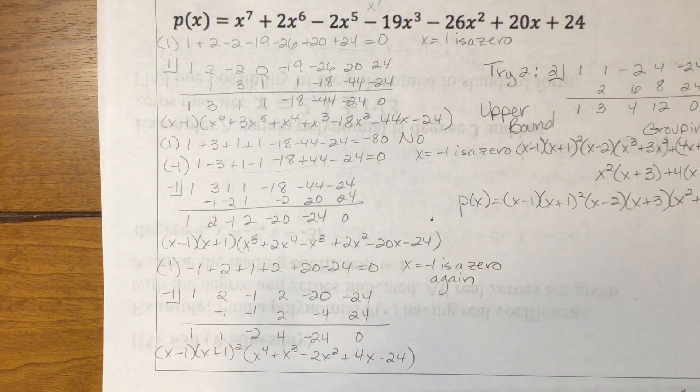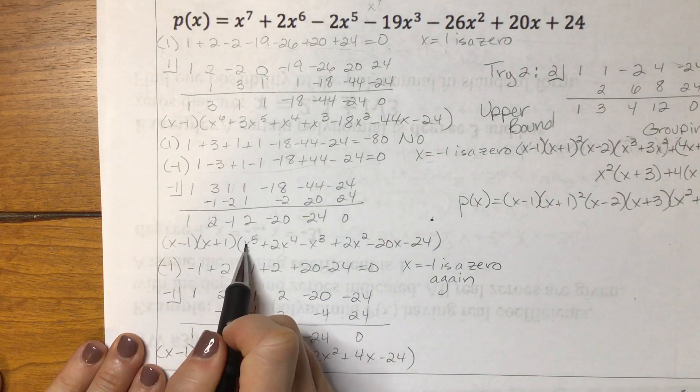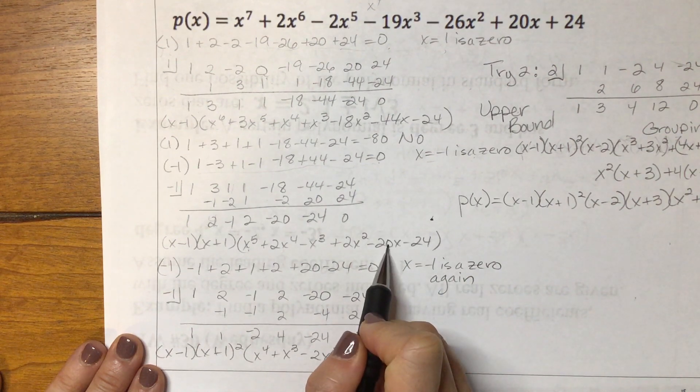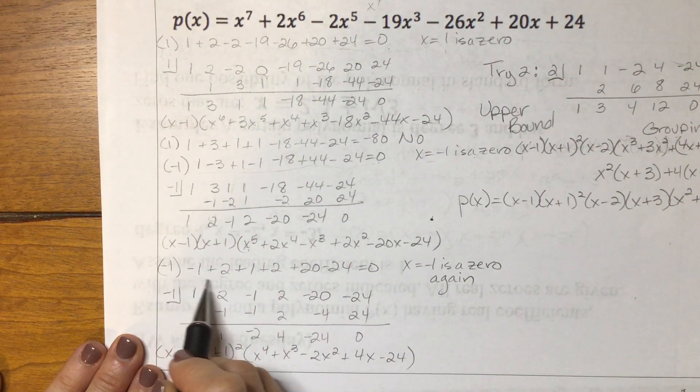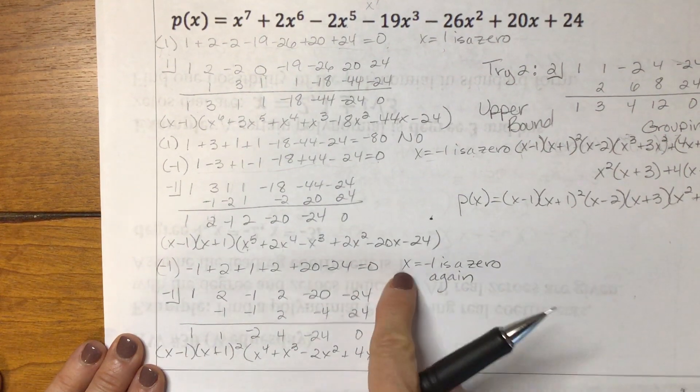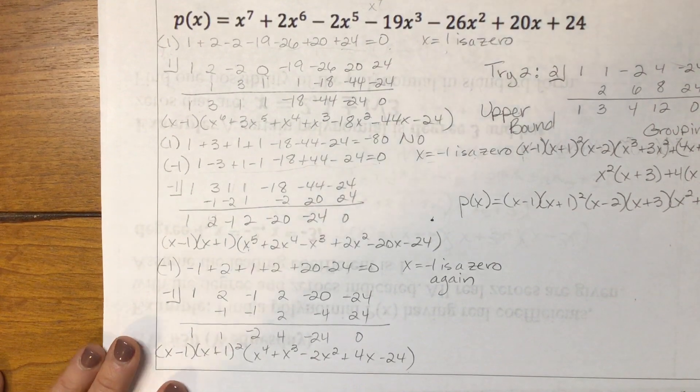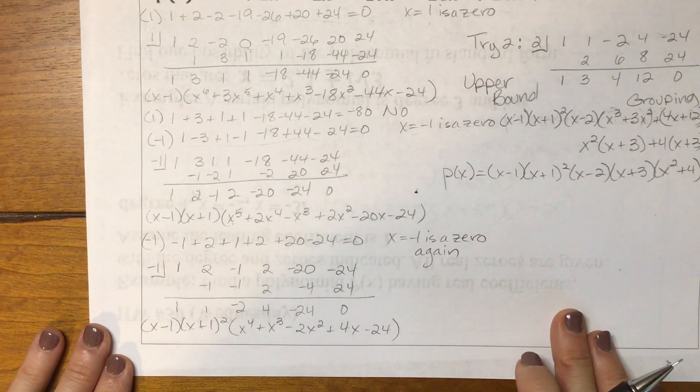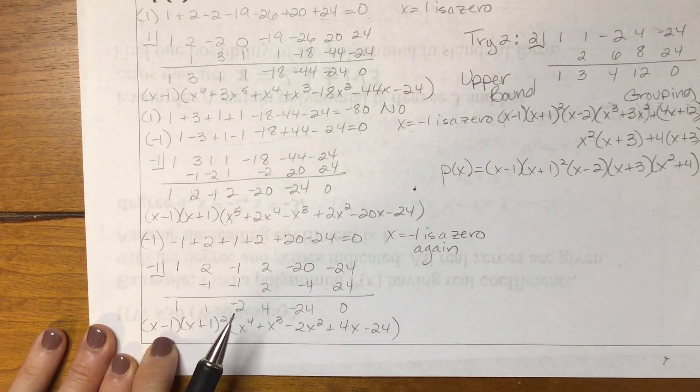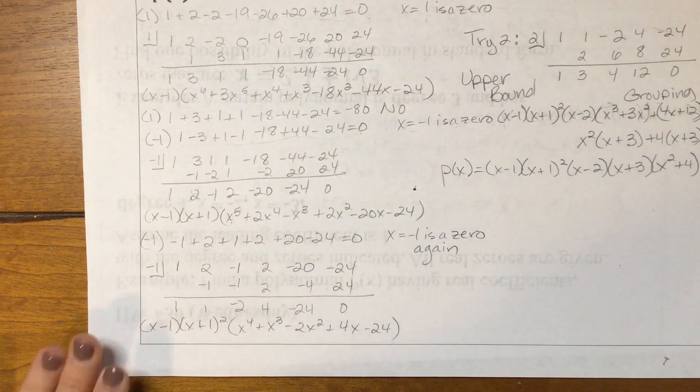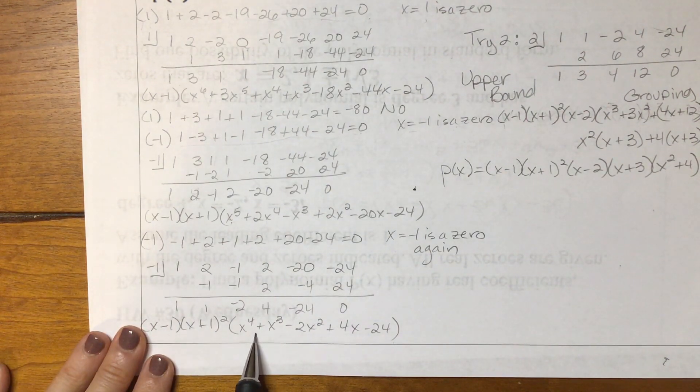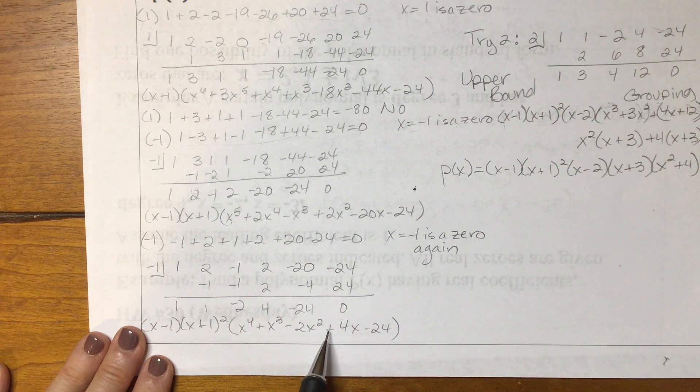Now I tested positive 1 twice, so I went and tested negative 1 again. And when I tested negative 1 by changing the signs on my x to the 5th, x to the 3rd, and x term to the opposite sign and added up those coefficients, it equaled 0 again. So x equals negative 1 is another zero. That means it has a multiplicity of 2. So I did it again. I did my synthetic division with negative 1 again. And at this point, I get x minus 1 times x plus 1 squared because now x plus 1 is a factor twice. And then what was left was x to the 4th plus x cubed minus 2x squared plus 4x minus 24.